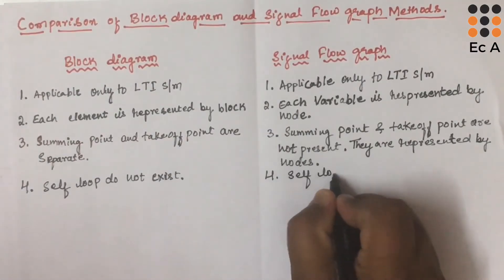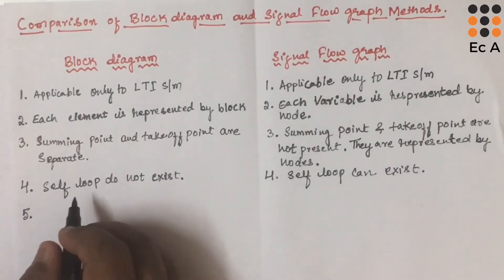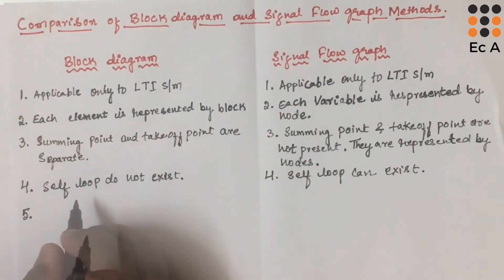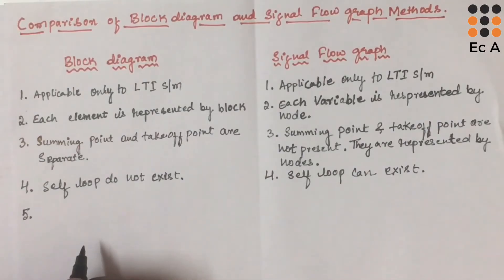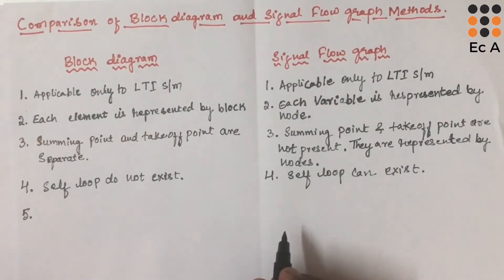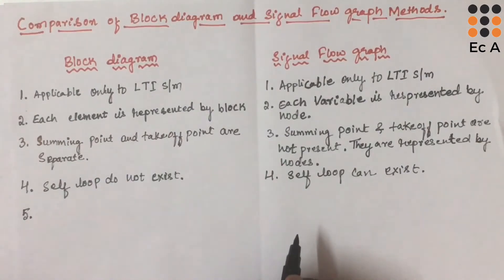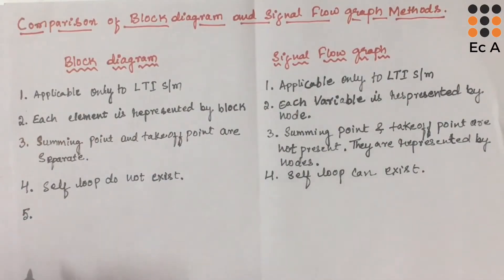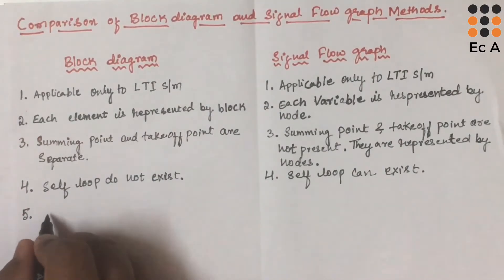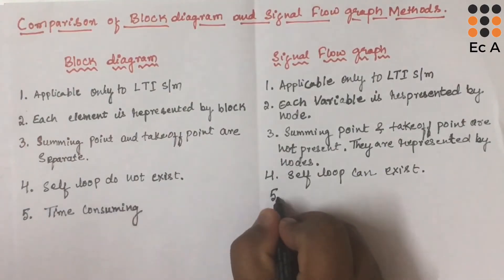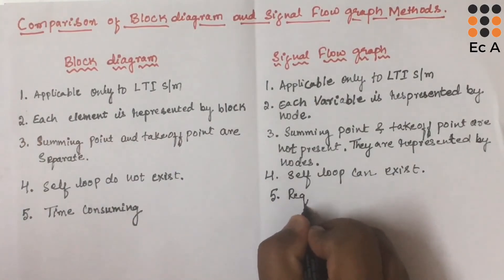The block diagram method is slightly complicated and time consuming, as the block diagram is required to be drawn and then reduced to obtain the overall transfer function. In case of signal flow graph, no need to draw it again and again — once drawn, we can use Mason's gain formula to obtain the overall transfer function. So block diagram method is time consuming and signal flow graph requires less time.